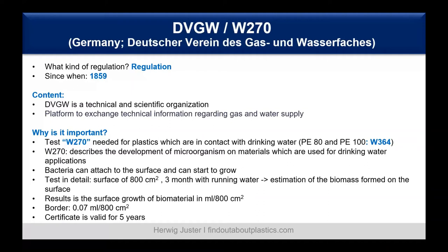The W270 describes the development of microorganisms on materials used for drinking water. A plastic part in contact with drinking water can have bacteria attach to its surface and start to grow. In detail, a surface of 800 square centimeters is in contact with running water for three months, then an estimation is done of the biomass formed. The result is given in milliliters per 800 square centimeters, and the threshold is 0.07 mL per 800 cm². When the material passes, it receives a certificate valid for five years.